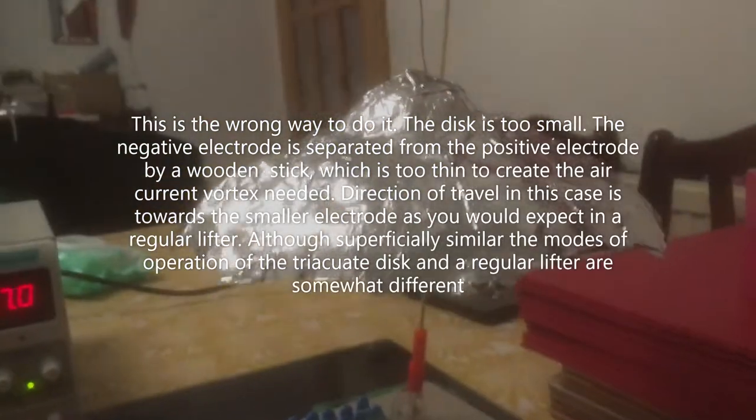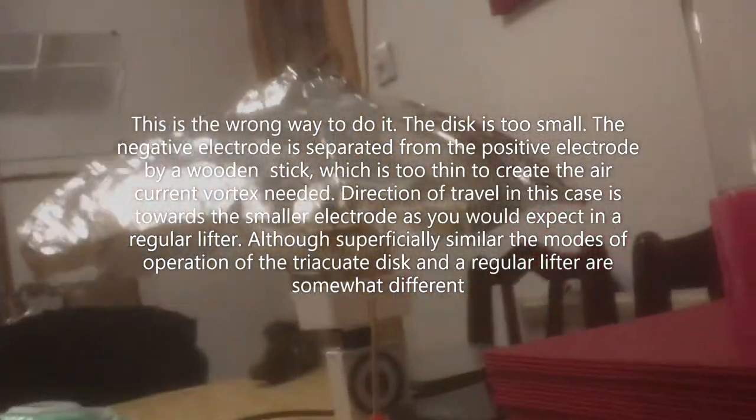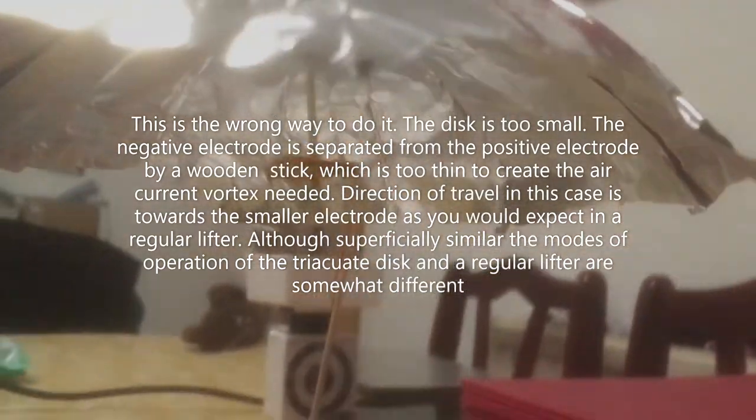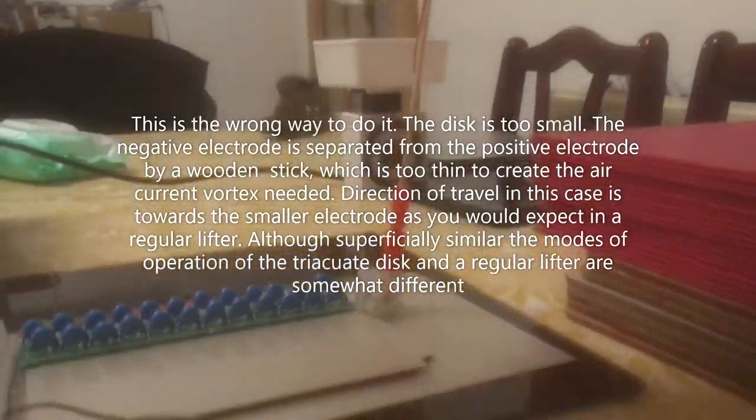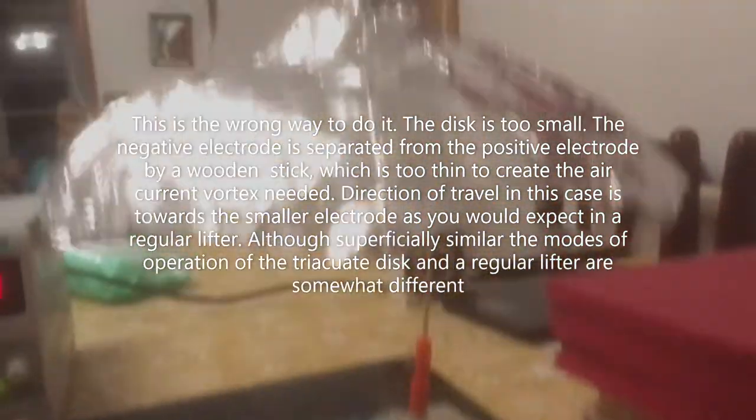This is a Triarchubit Disc. Positive at the top, negative centre electrode. Wrapped in Kapton, so it's insulated. And the negative is directly below. So the line of action is in a straight line.